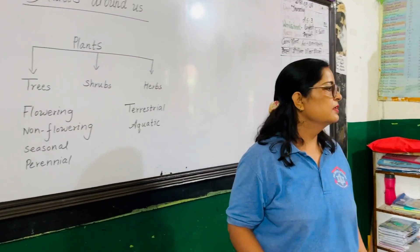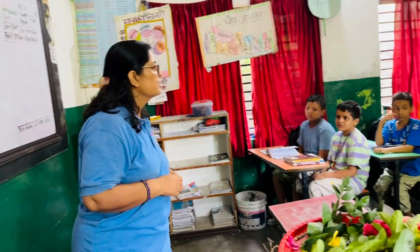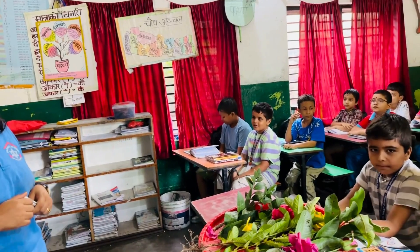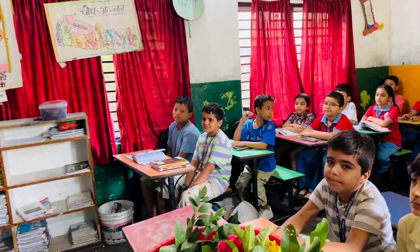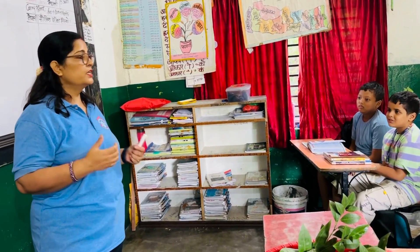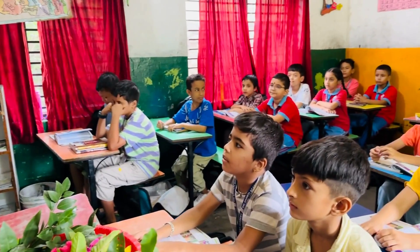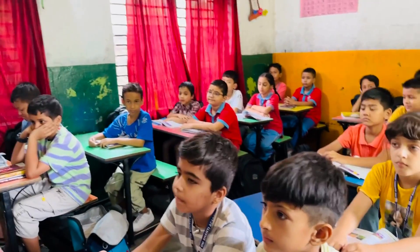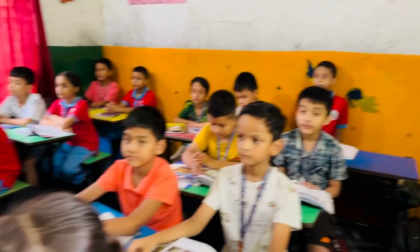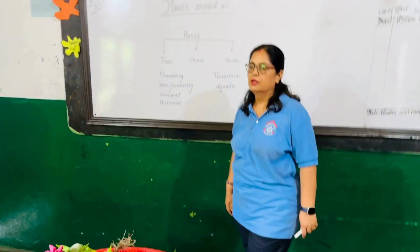Plants are divided into trees, shrubs and herbs. There are so many plants which are very tall and strong. These plants are called trees. Trees have a hard and woody stem called trunk, and the trunk has many branches. On their branches, there are many leaves which occupy more space.